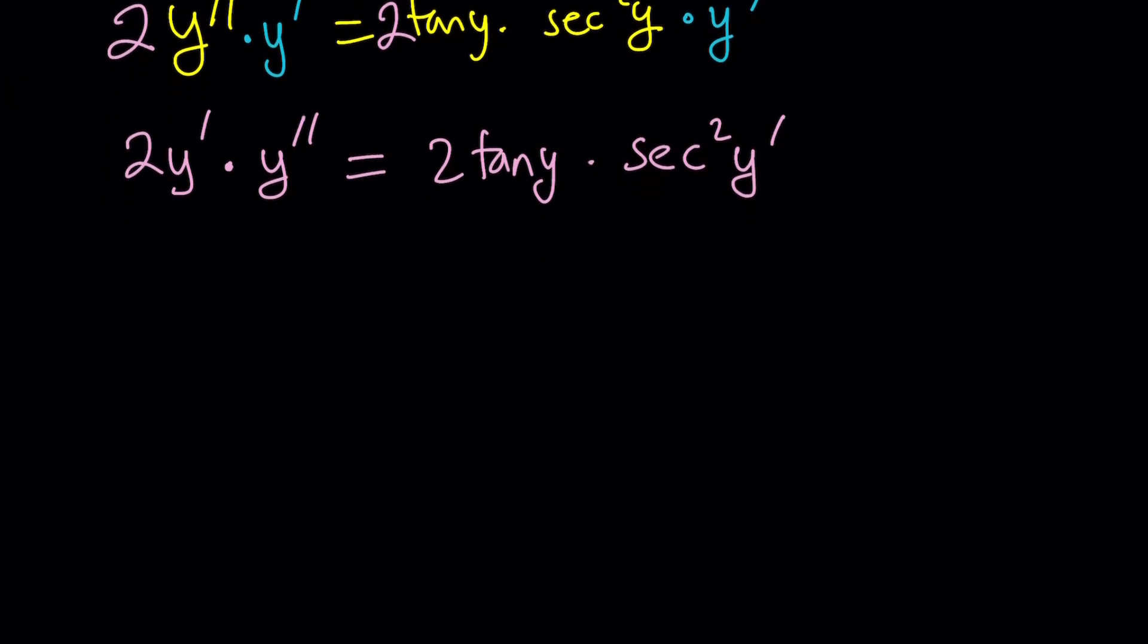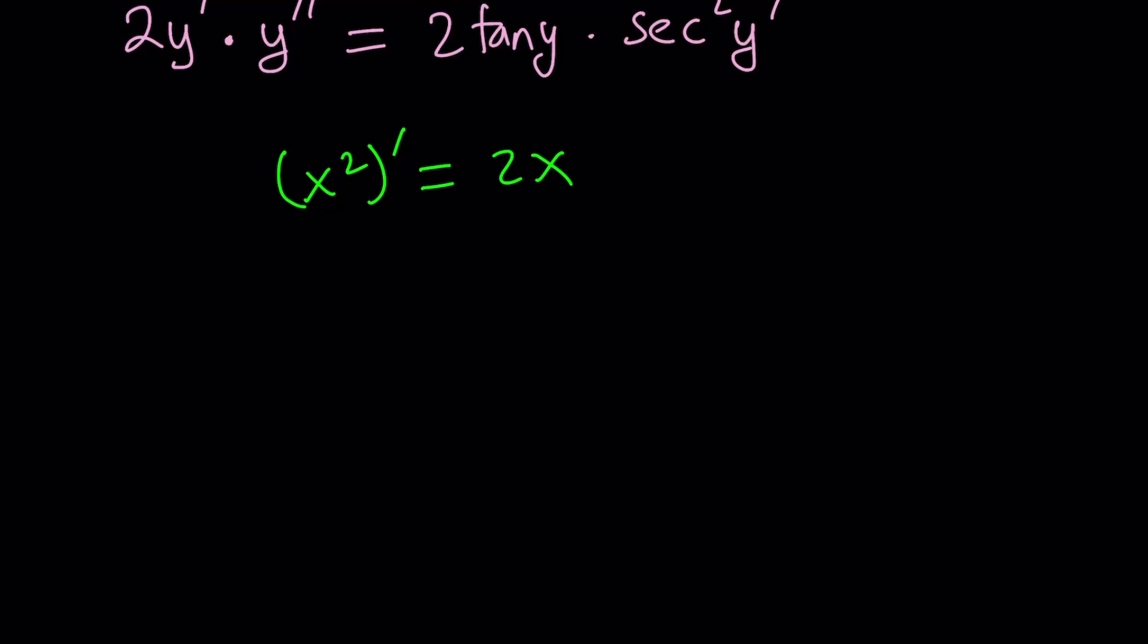And the right hand side as two tangent y times secant squared y prime. Now, think about the derivative of a function, which is going to be in this case x squared. What's the derivative of x squared? It's 2x. What about y squared? If you differentiate y squared, you're going to get 2y just like 2x, but you also have to multiply by y prime. This is the pattern we have. Do you see what I see?